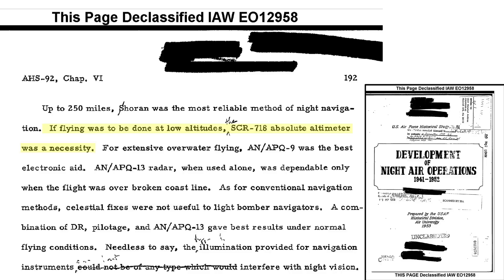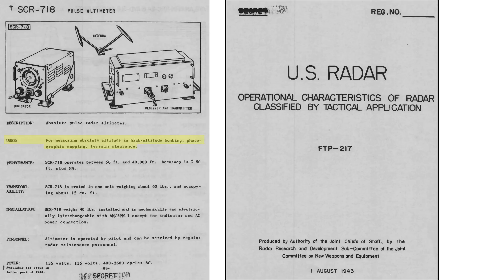The SCR-718 radar altimeter was a necessity. Other uses of the radar altimeter include precision bombing, photographic mapping, or navigation over terrain, as discussed in this 1943 U.S. radar document.